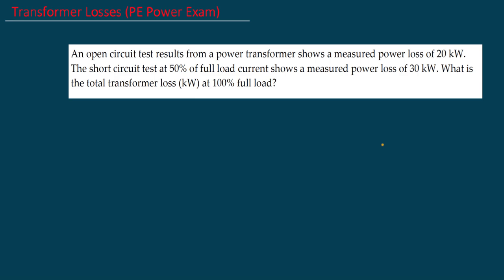We have the open circuit test result and the short circuit test result at 50% full load. The total losses at 100% load equals the I²R losses at 100% plus the no-load losses.